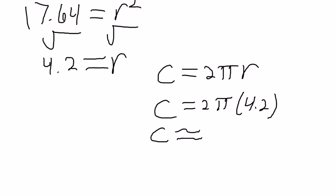From here, I'll go ahead and type that in - 2 times π times 4.2 - and we'll get an approximate answer. I got 26.389 and some other digits.